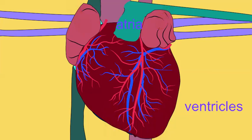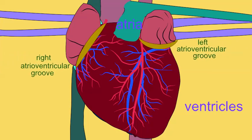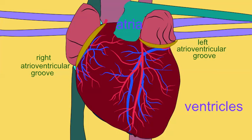Between the atria and the ventricles are atrioventricular grooves on the left and right sides, and it is here that blood vessels flow. The right and left coronary arteries flow through the right and left atrioventricular grooves. The atrioventricular groove is also known as the coronary sulcus.